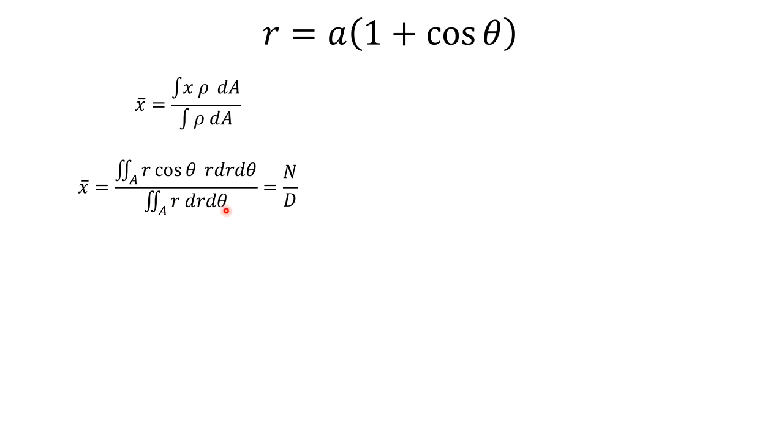So we will separately calculate numerator and denominator. So numerator is: now our region lies in all four quadrants, so theta varies from 0 to 2 pi, and r varies from 0 to the boundary of the cardioid, which is a into bracket 1 plus cos theta. So when you integrate this, we get...